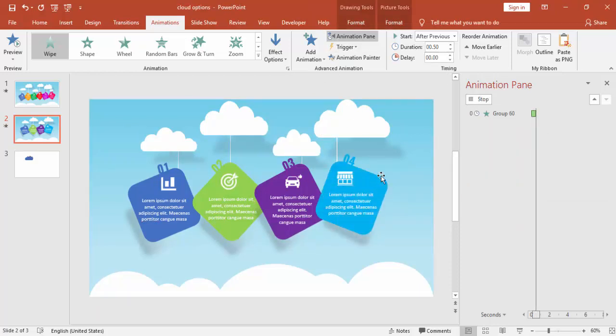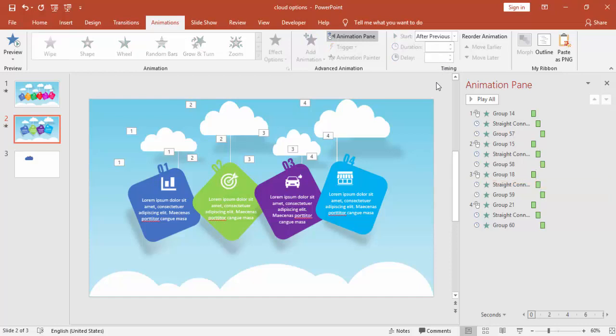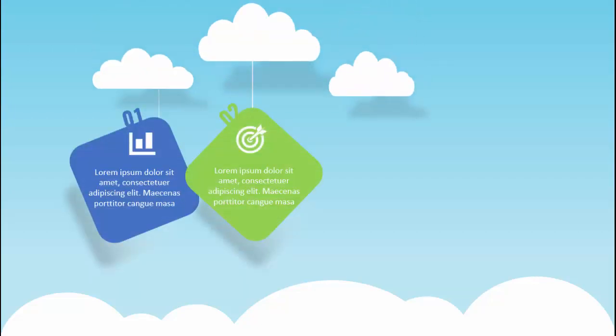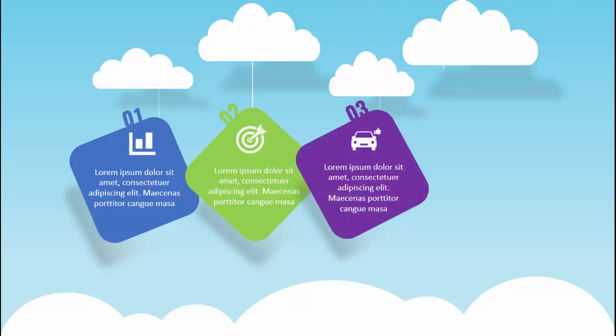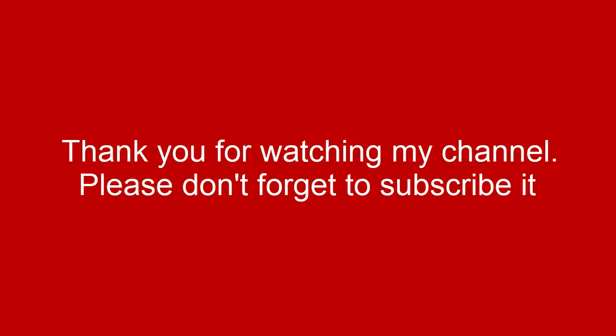Make sure all the animations are in the right place with the correct animation applied. Let's see the final result: the cloud comes in, then option one; second cloud, option two; third cloud, option three; fourth cloud, option four. That's it from me, friends. Thank you for watching my YouTube channel — don't forget to subscribe to PowerPoint University. See you soon with more interesting stuff. Goodbye!